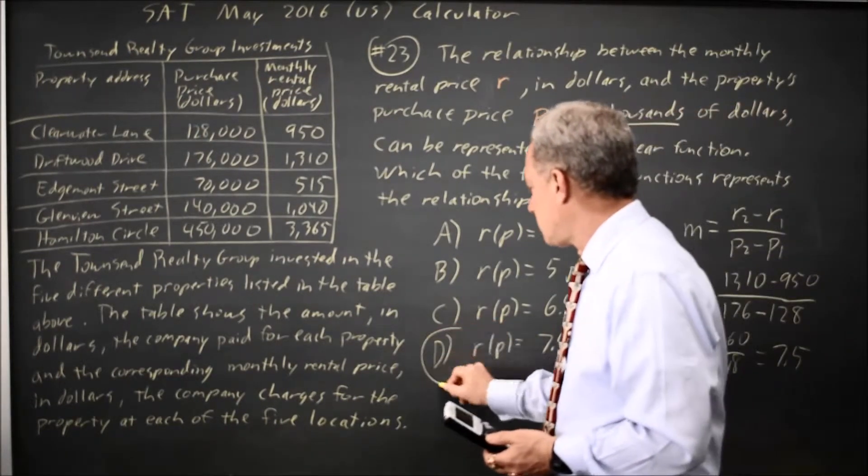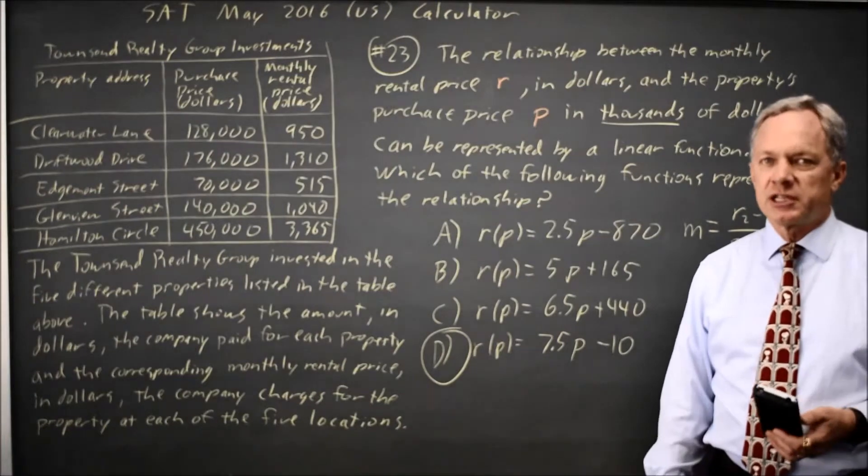Since choice D is the only choice with a slope of 7.5, that would be the correct answer.